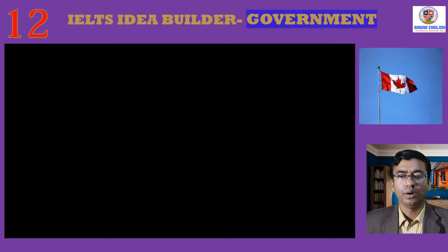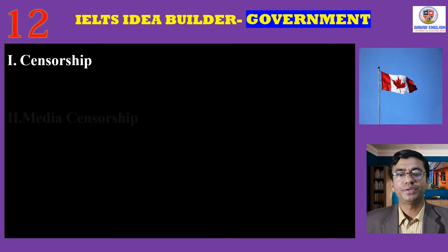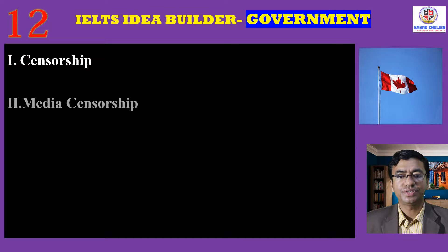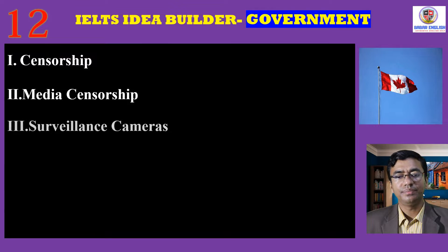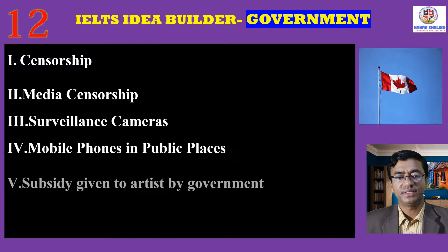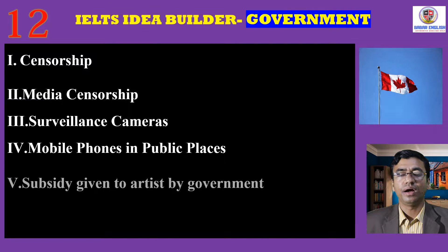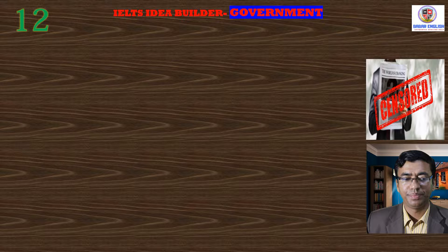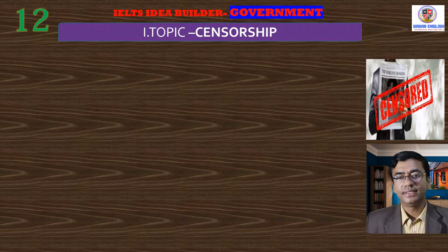This is the 12th topic of our idea builders. Under this main topic we will cover some subtopics. Our today's subtopics include censorship, media censorship, surveillance camera, mobile phones in public places, and subsidy given to artists by government. So at the very beginning we'll start with our first subtopic, and that is censorship imposed by government.